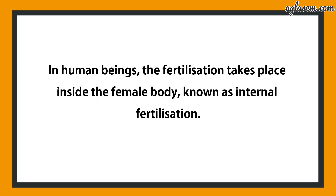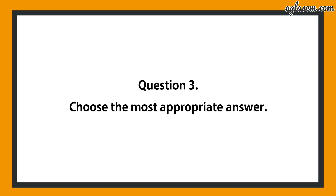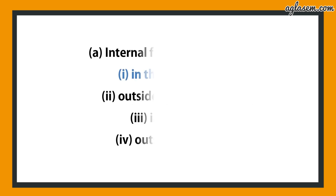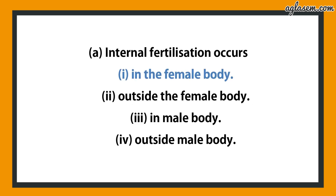Moving to question number 3: choose the most appropriate answer. Part 1 says internal fertilization occurs. The options are: 1) in a female body, 2) outside the female body, 3) in male body, 4) outside the male body. The answer is: in the female body.